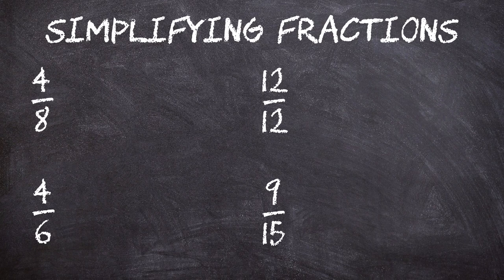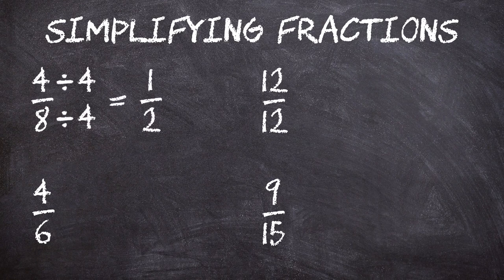So for the first one, four over eight, or four-eighths, we can divide top and bottom by four, giving us one over two, or one-half. That is, if we have four pieces of pizza remaining of our eight-sliced pizza, we have half the pizza remaining. It makes sense, right?